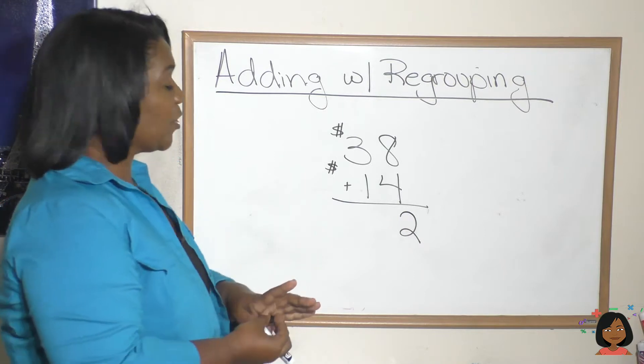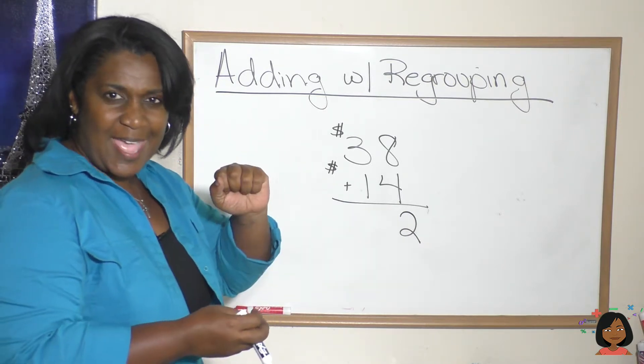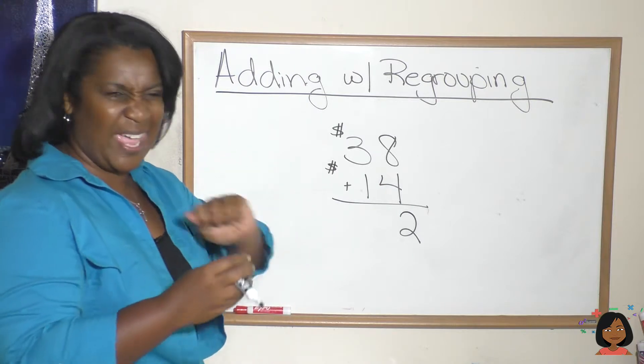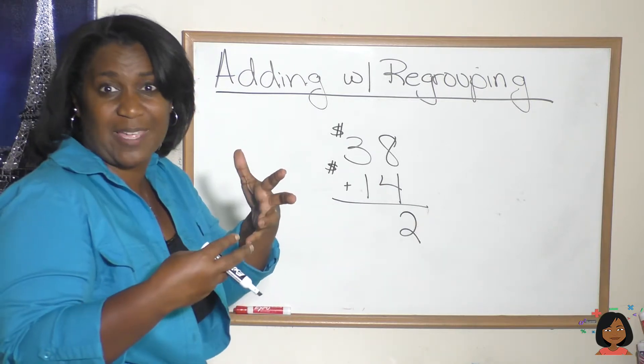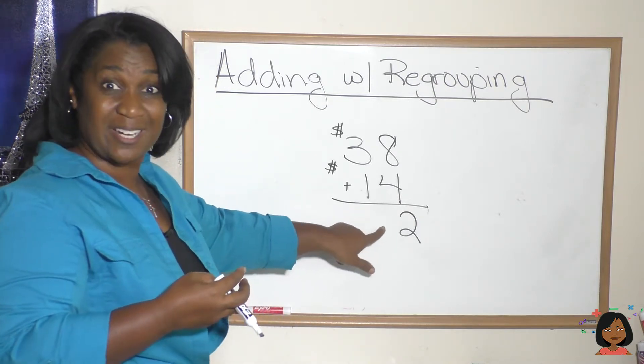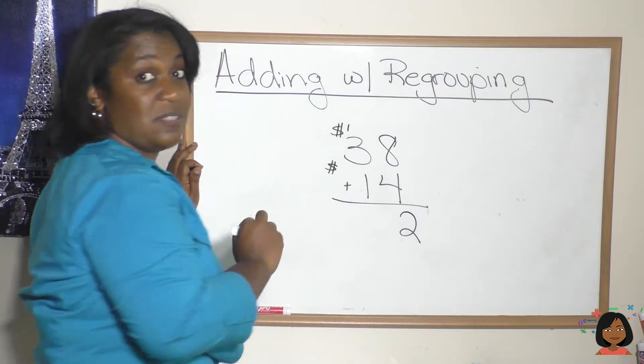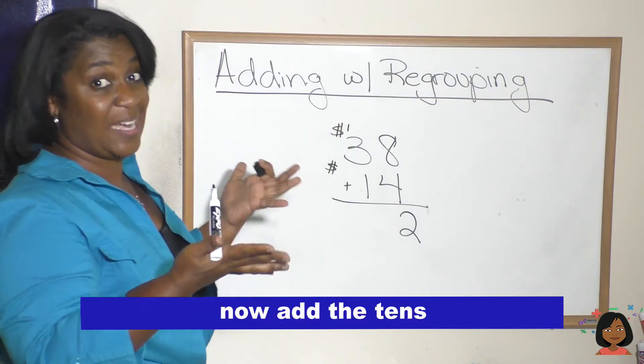Now we're gonna write our two down. But remember we took ten of the ones and we handed it in and we got a ten in its place. So that's what we're doing mentally. Instead of writing that ten down here we're gonna write it up here because it's now a ten dollar bill. And let's add it with the tens.